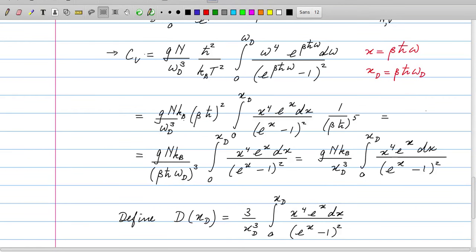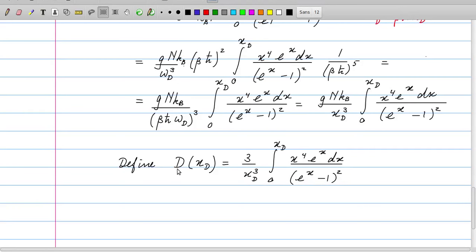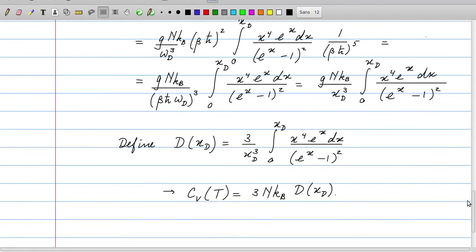Now we define a new function which is precisely this integral here including the x_D to the power 3 and the factor of 3 in the numerator. This function is not the Debye function, although I have given it a letter D here, but it's closely related to another function which is called the Debye function. This function D has been used here in order to write the specific heat in a streamlined form where we have the Dulong-Petit result and then multiplied by D as a function of x_D. x_D is the only variable that is remaining in the function capital D.